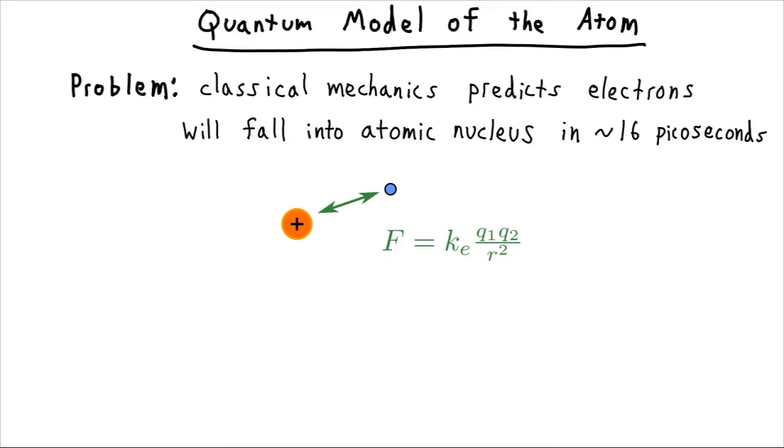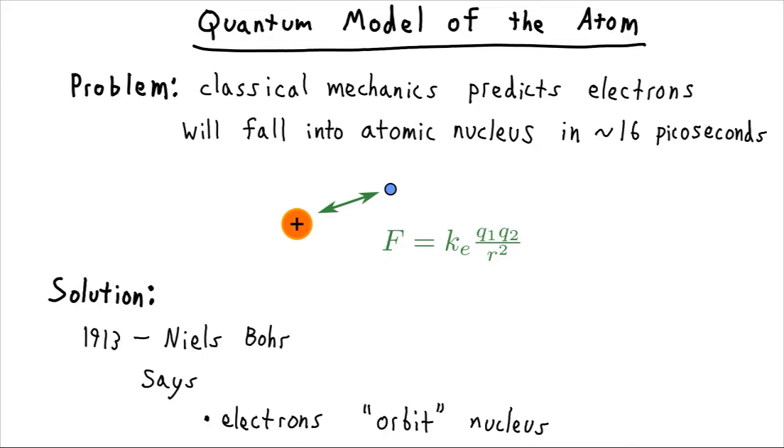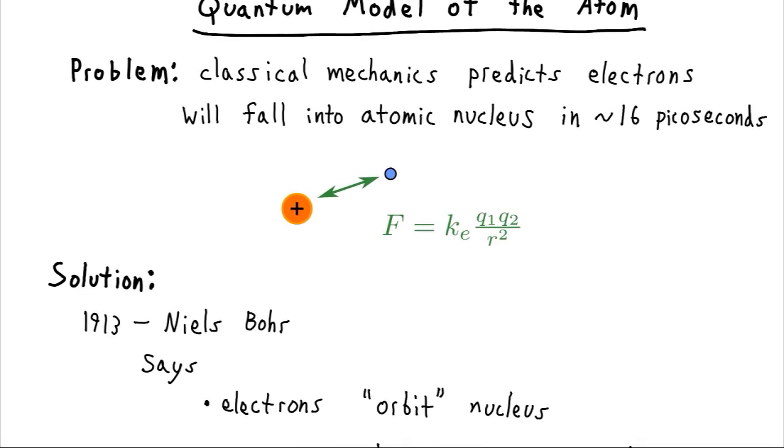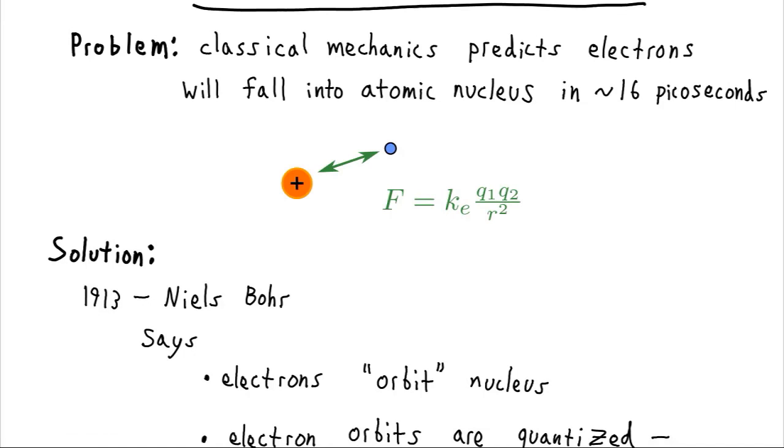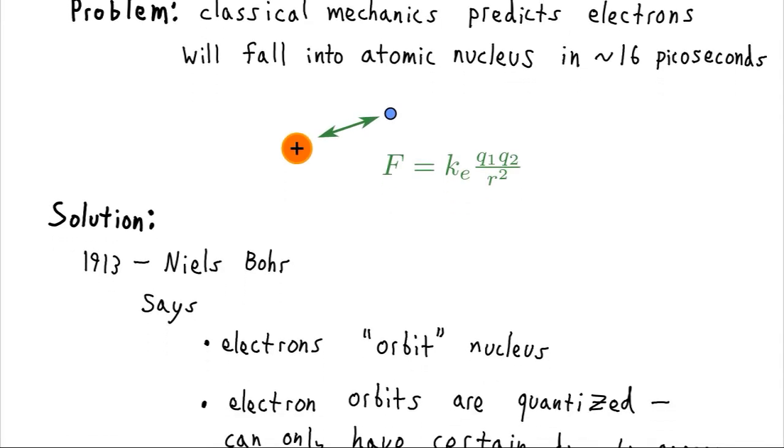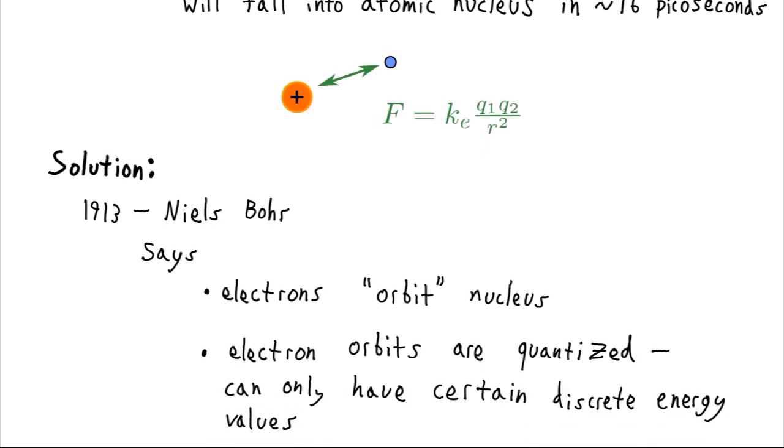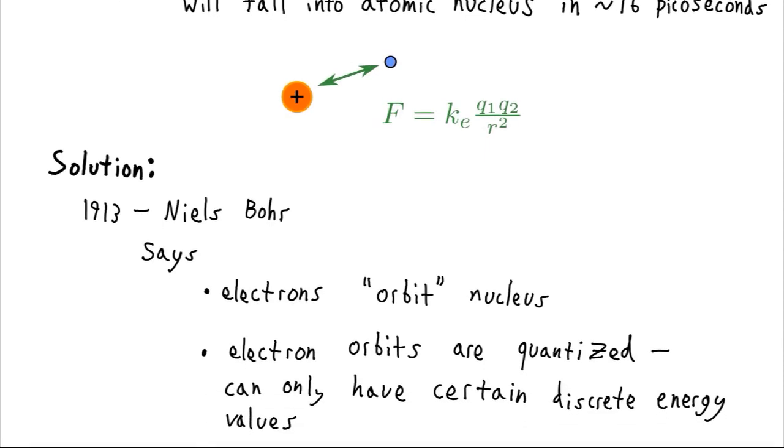Well, presumably it can't. So the solution comes in 1913 due to the German physicist Niels Bohr. And what he says is that electrons do kind of orbit the nucleus, but these orbits are quantized. They can only have certain discrete energy values.